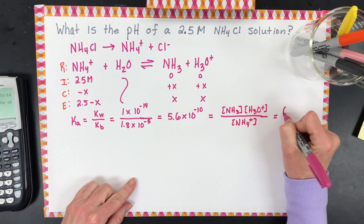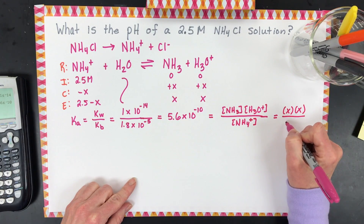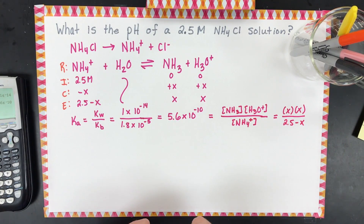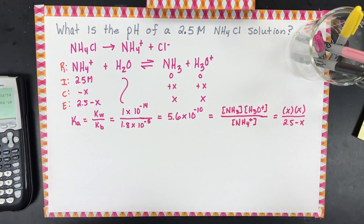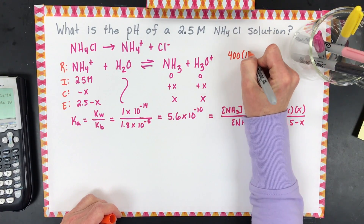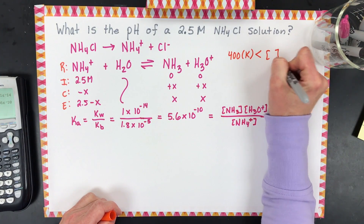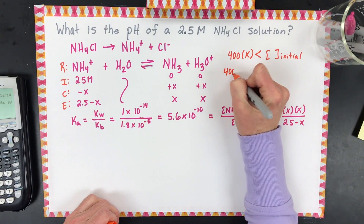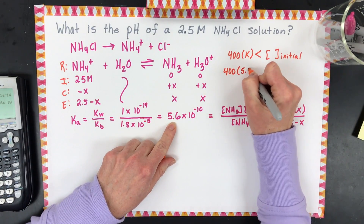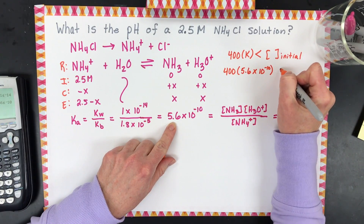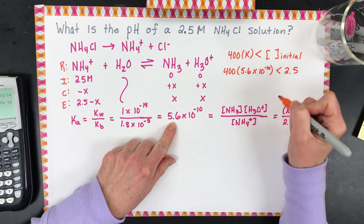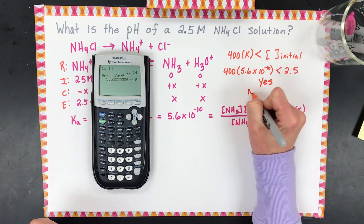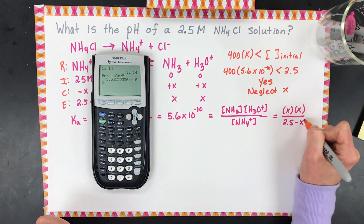That equals X times X divided by 2.5 minus X. The goal is: can we ignore that X? You can take 400 times the K value, and as long as it's less than the initial concentration you can neglect X. So 400 times 5.6×10⁻¹⁰ — as long as that is less than 2.5, we can neglect X. We can see that this is absolutely yes, so we can neglect X.